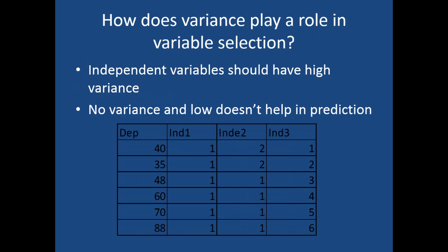The next question is: how does variance play a role in variable selection? You always expect the independent variables to have high variance. If the independent variables have high variance, their ability to explain the variation in the dependent variable will be high — or at least there is a relatively higher chance that their ability to explain the variation in the dependent variable will be more.